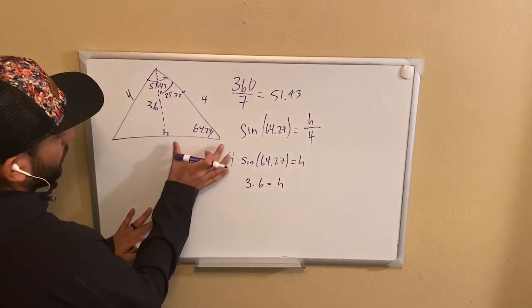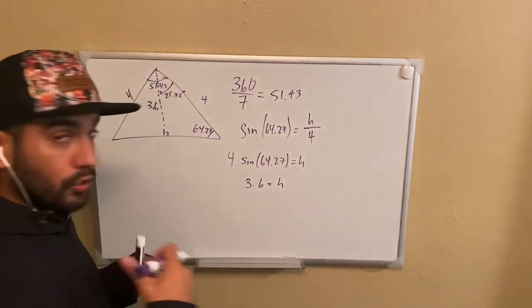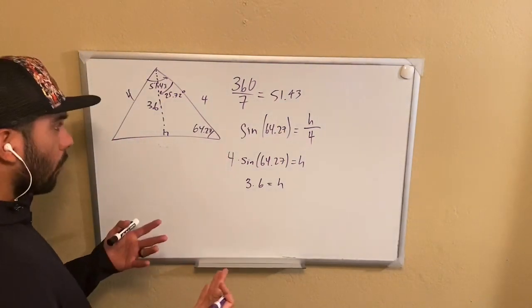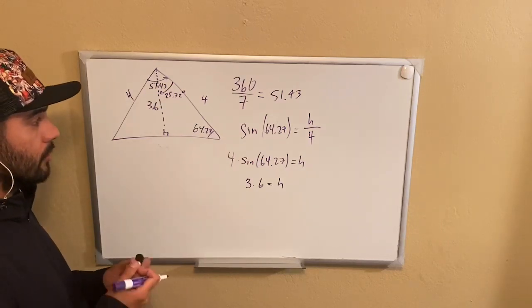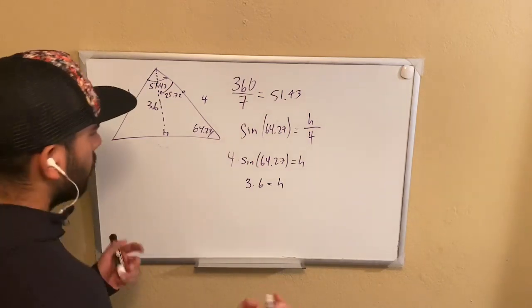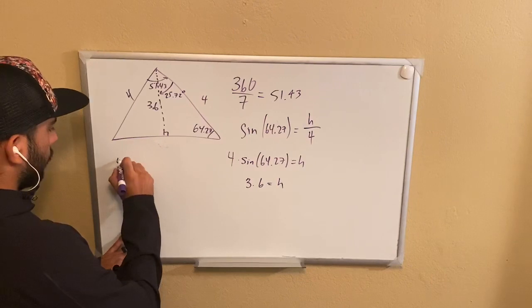Now, how do we find this value right here? We can still use SOHCAHTOA. Or keep in mind that since this is a 90-degree angle, we have a right triangle. We can also use the Pythagorean theorem. So 4 squared, which is our hypotenuse,